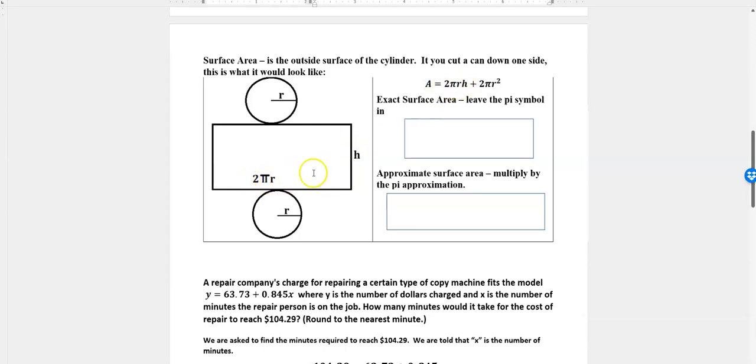We want to find the exact surface area, leaving the pi symbol in. We're just going to replace everything we have given in here and leave that pi symbol in. We already have a 2 here and a 2 there, and then we have r which is 2 and h which is 10.